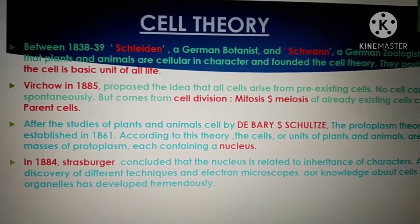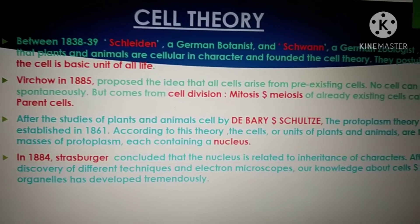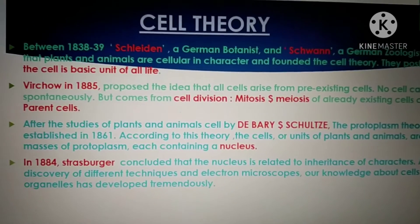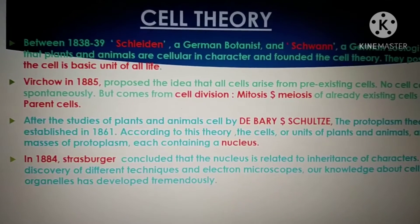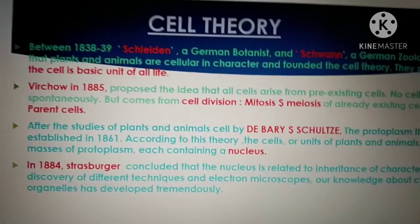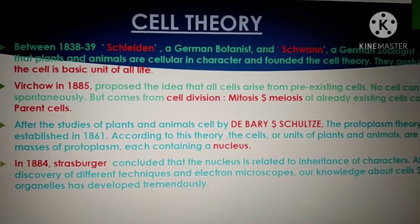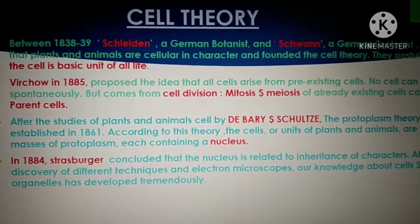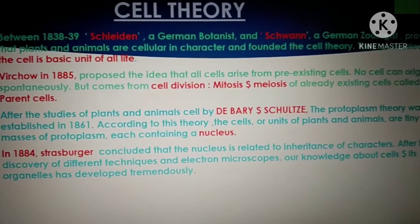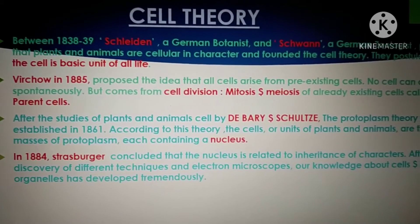Rudolf Virchow in 1855 proposed the idea that all cells arise from pre-existing cells. No cell can originate spontaneously; cells come from cell division. Cell division is of two types: mitosis and meiosis. This means already existing cells, called parent cells, divide to give rise to new cells.